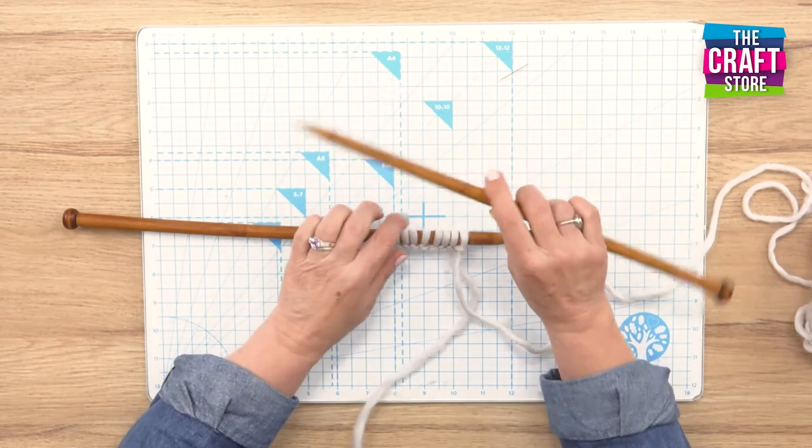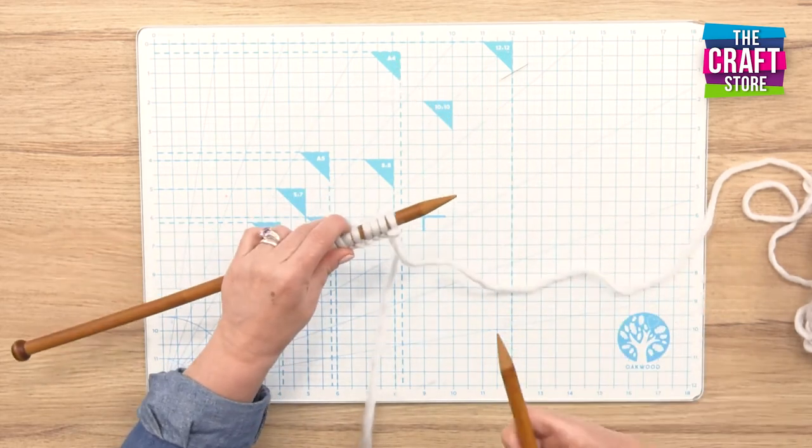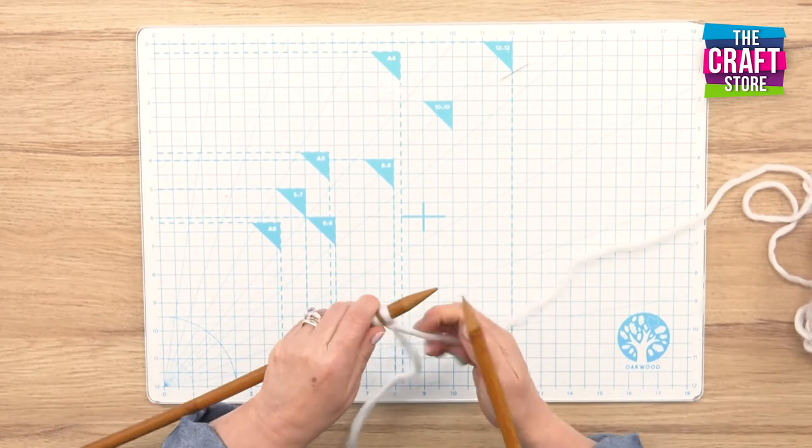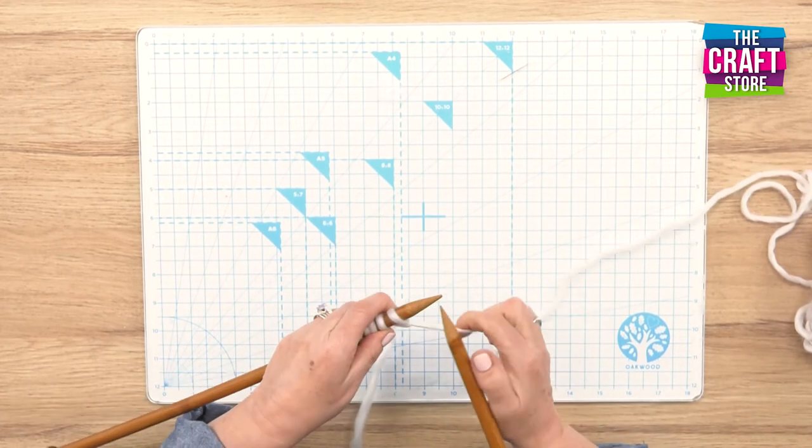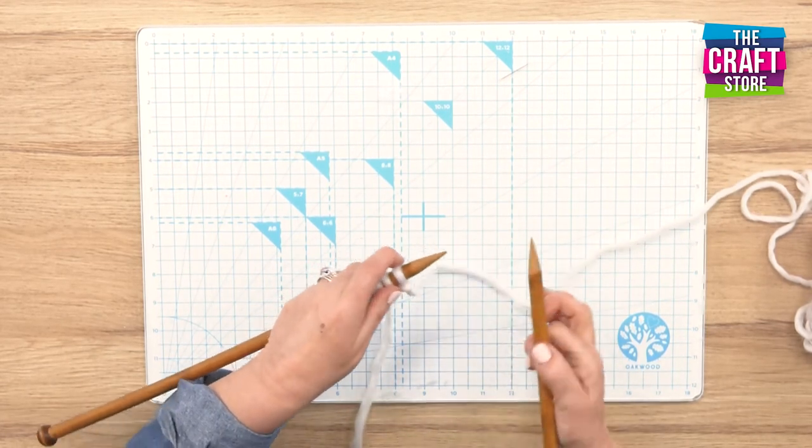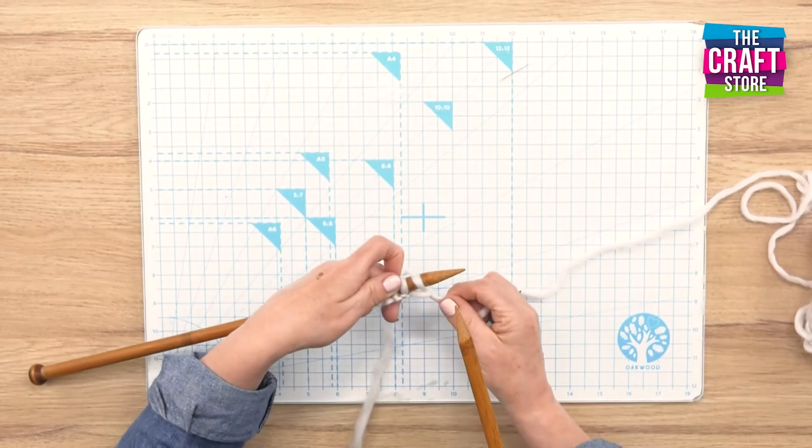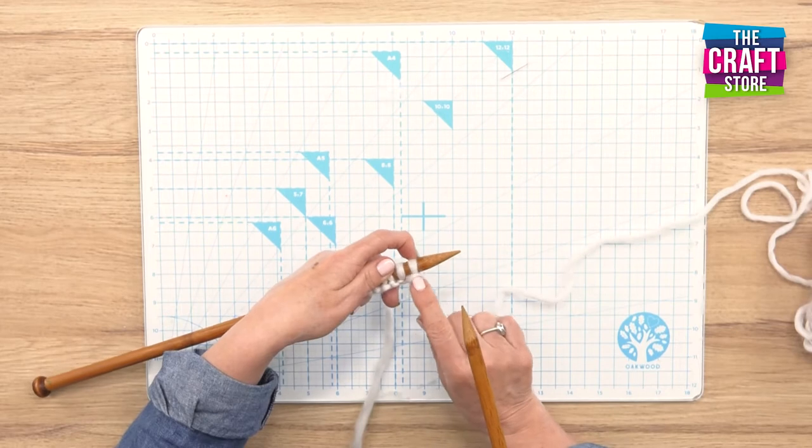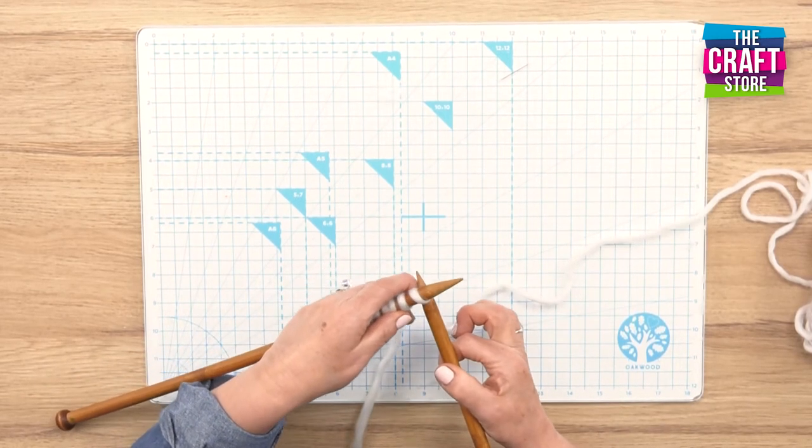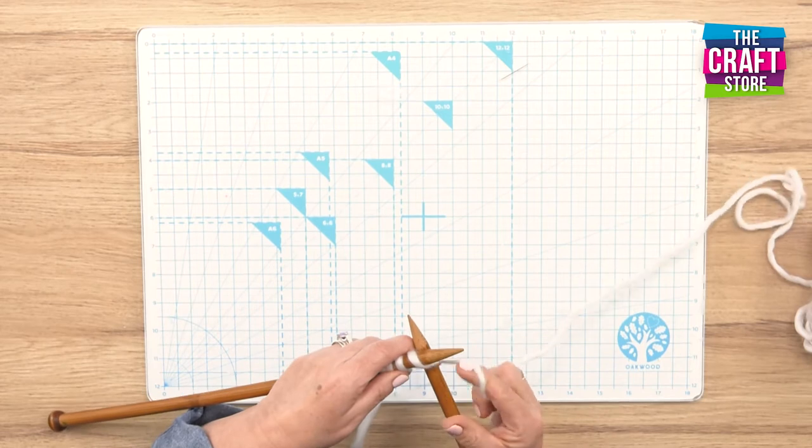So first of all we're going to just pop our needle through this stitch. So what we're going to do is through the bottom, trying to get it very clear for you. You can see this is where we've casted on, so we're just going to go into this stitch at a right angle.